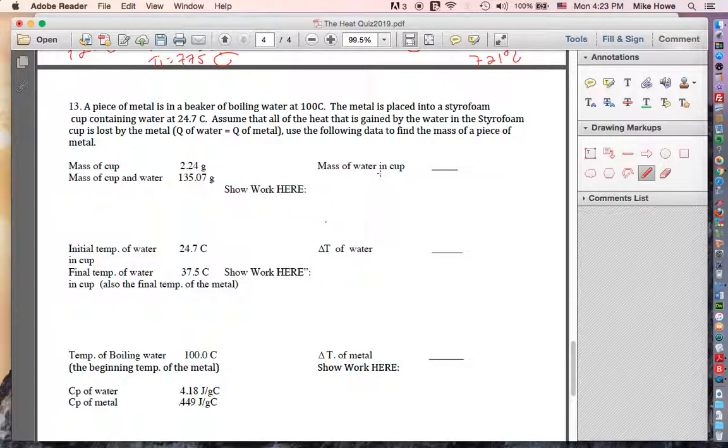So here we go with page four of the test. On this one, you want to be sure you read everything. It says a piece of metal is in a beaker of boiling water at 100 degrees. So make a little picture in your mind.